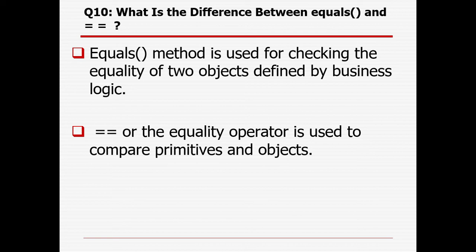What is the difference between the equals method and the equality operator? Equals is a method in Java used for checking the equality of two objects defined by business logic. Whereas the equality operator (==) is used to compare primitive data types or any kind of object.